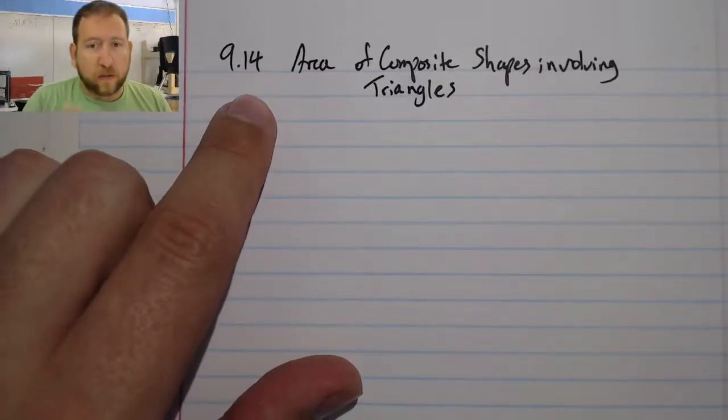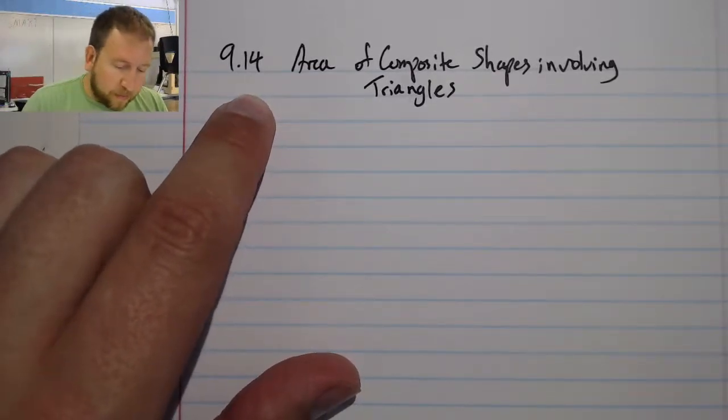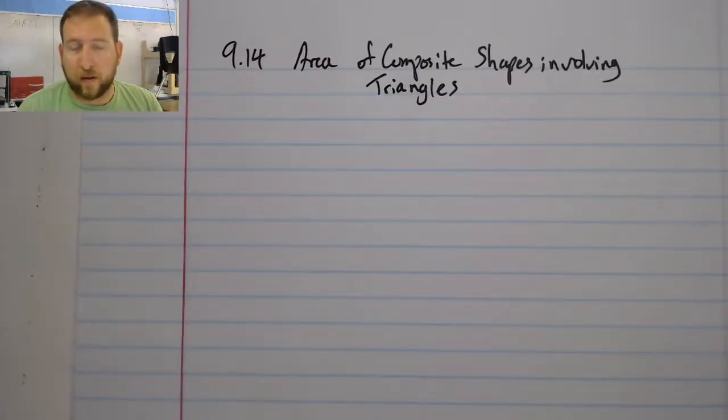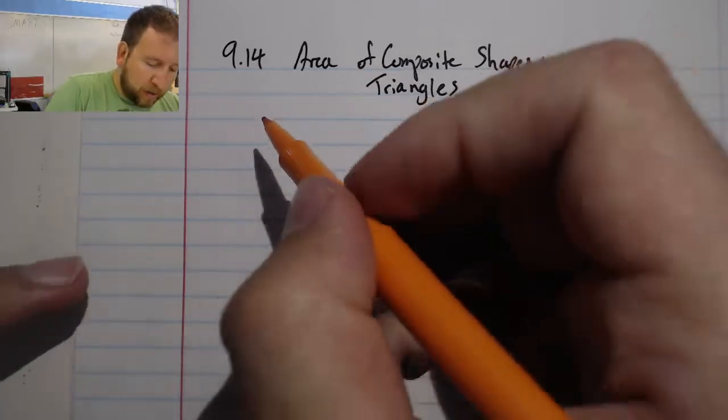Alright, I want to talk about section 9.14 today. It's called Area of Composite Shapes Involving Triangles. And the key word here that we're going to be looking at is this composite.